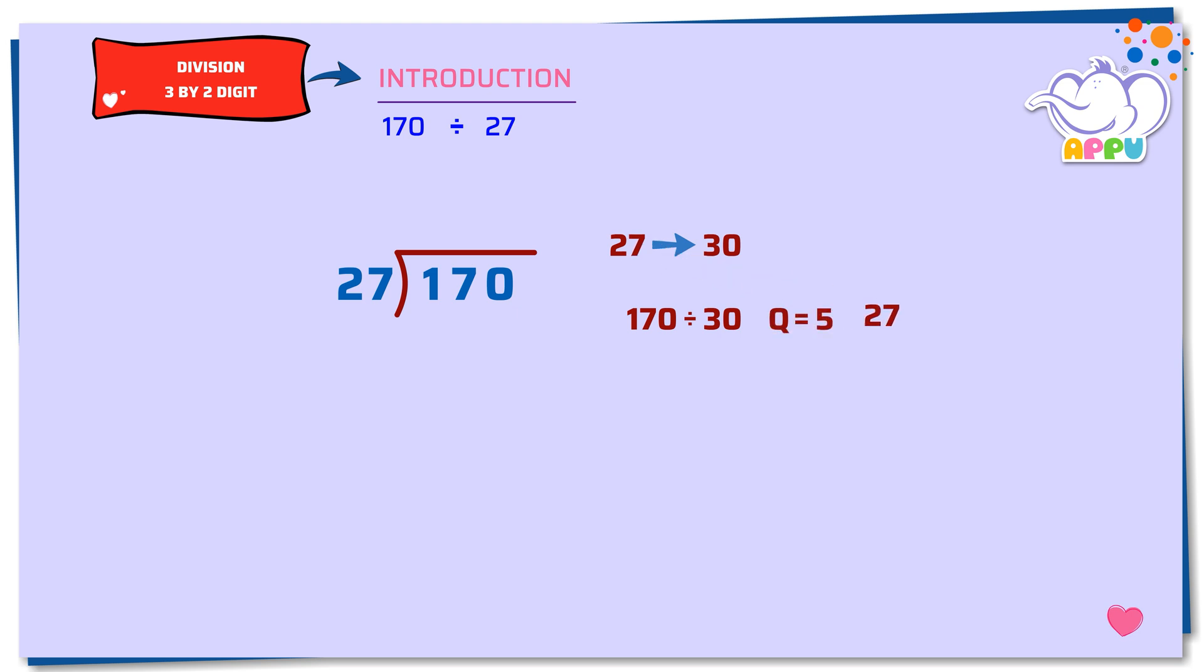We multiply 27 times 5 equals 135, which looks much less than 170. We try the next number 6. We multiply 27 times 6 equals 162, which is just less than 170. So, it takes six 27s.